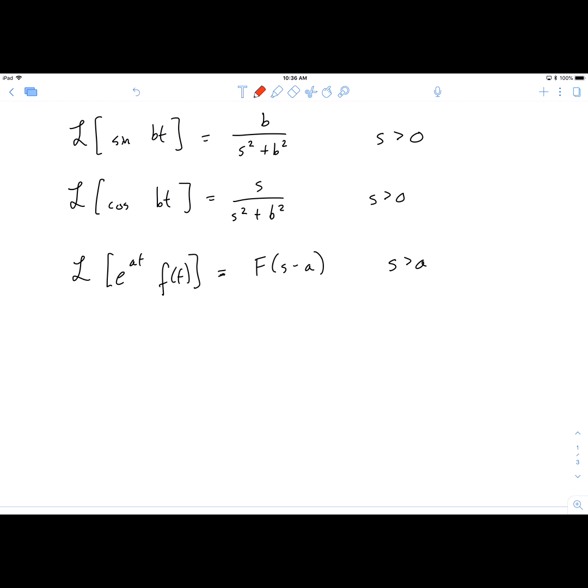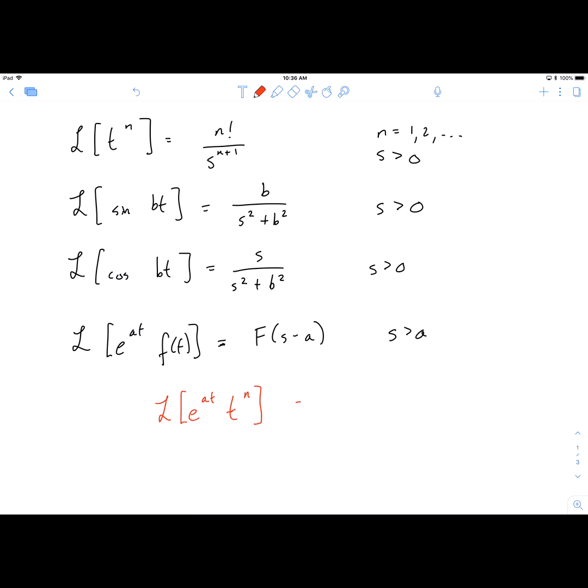For example, if you have the Laplace Transform of e to the at times t to the power of n, well t to the n by itself would look like n factorial over s to the n plus 1. Adding this exponential modifier just means we remove the s and replace it with s minus a.